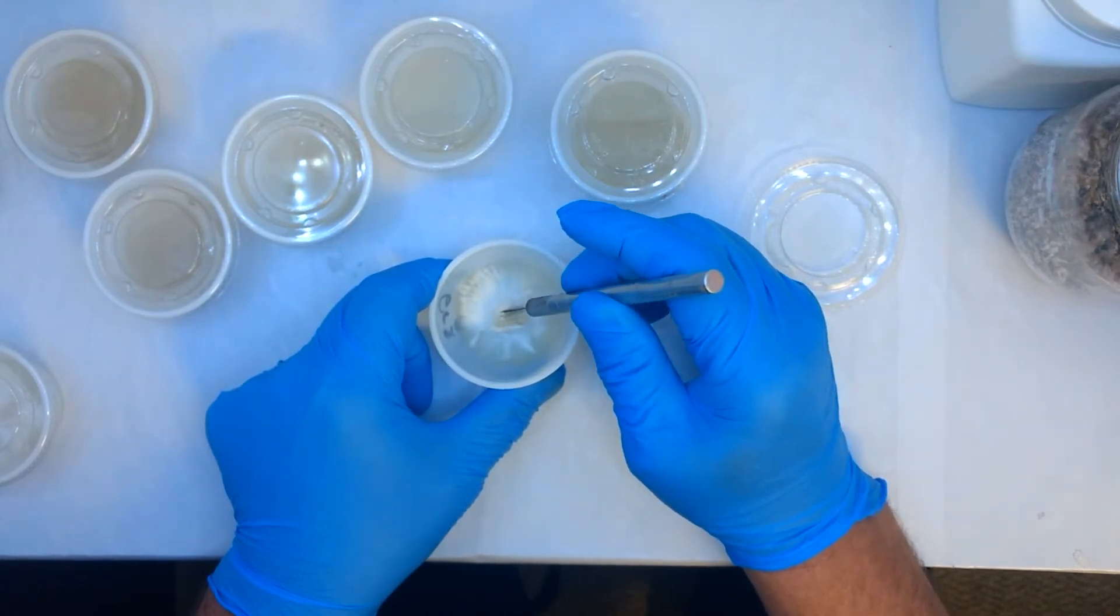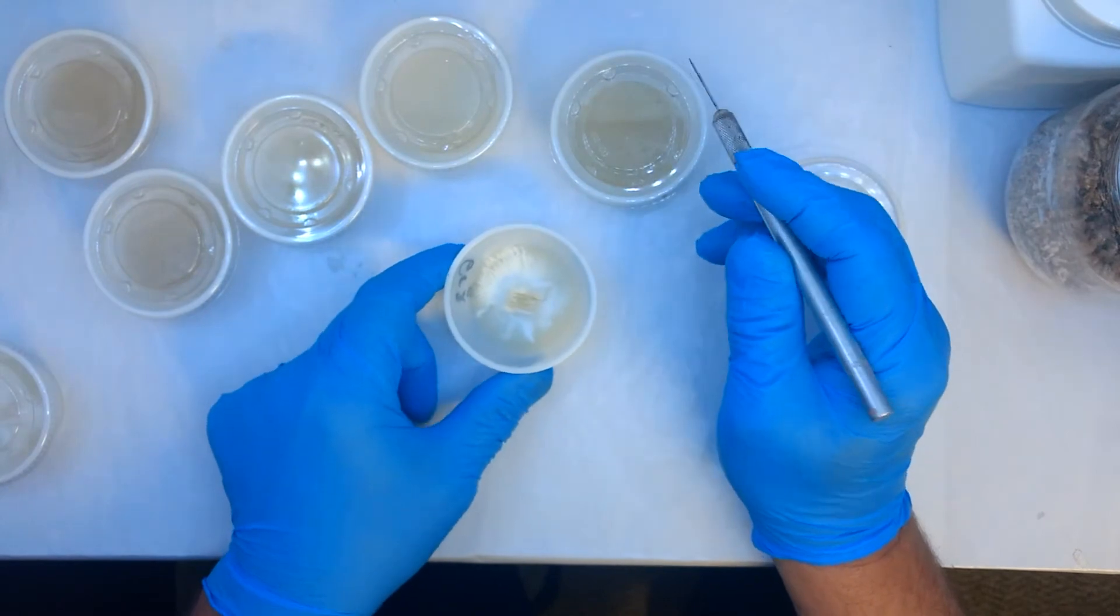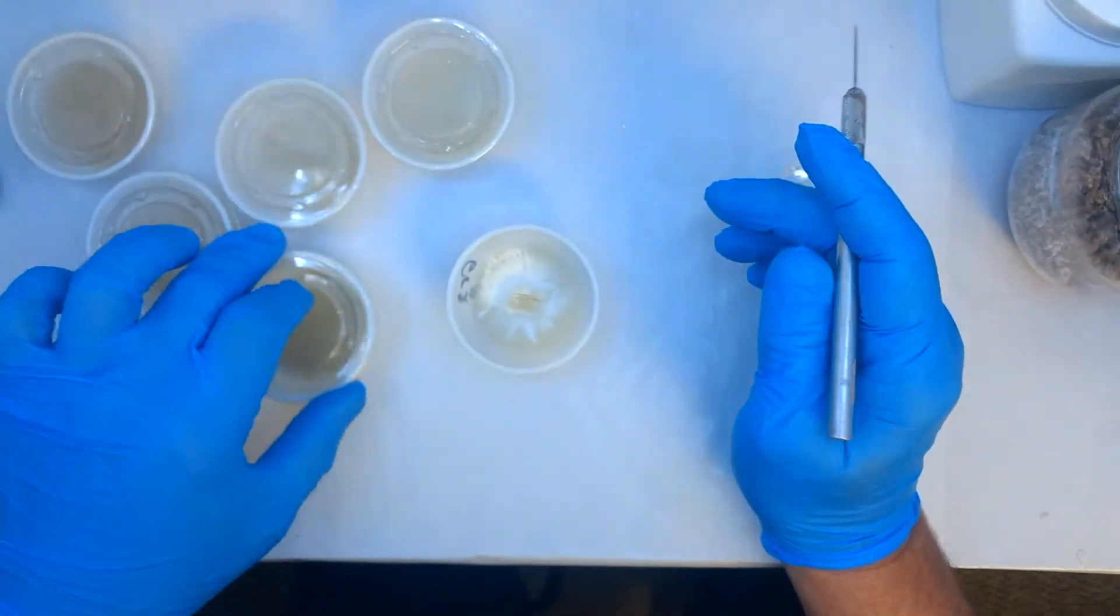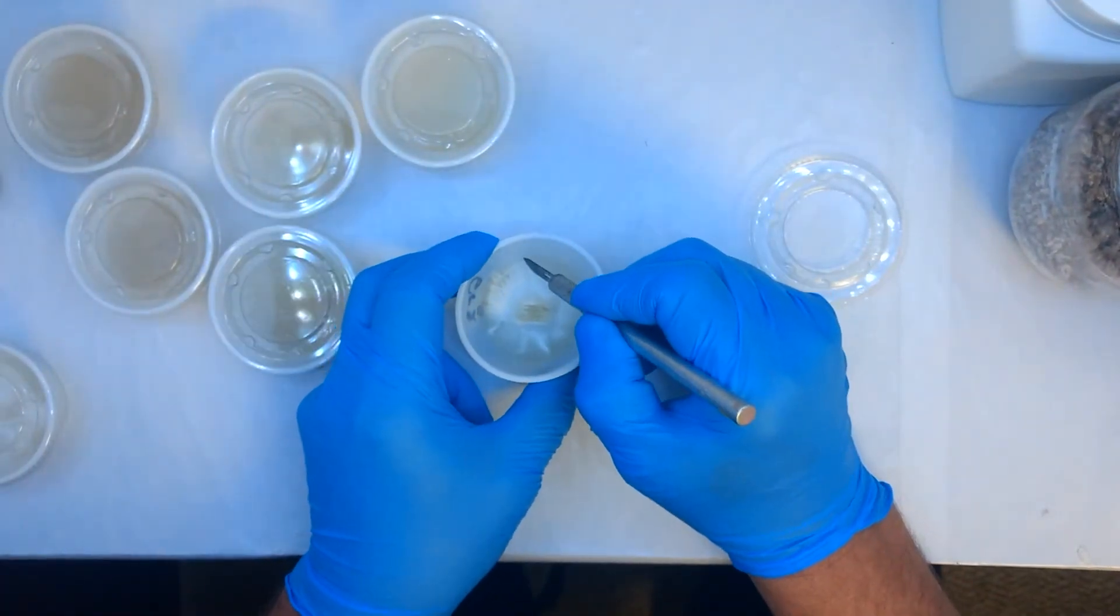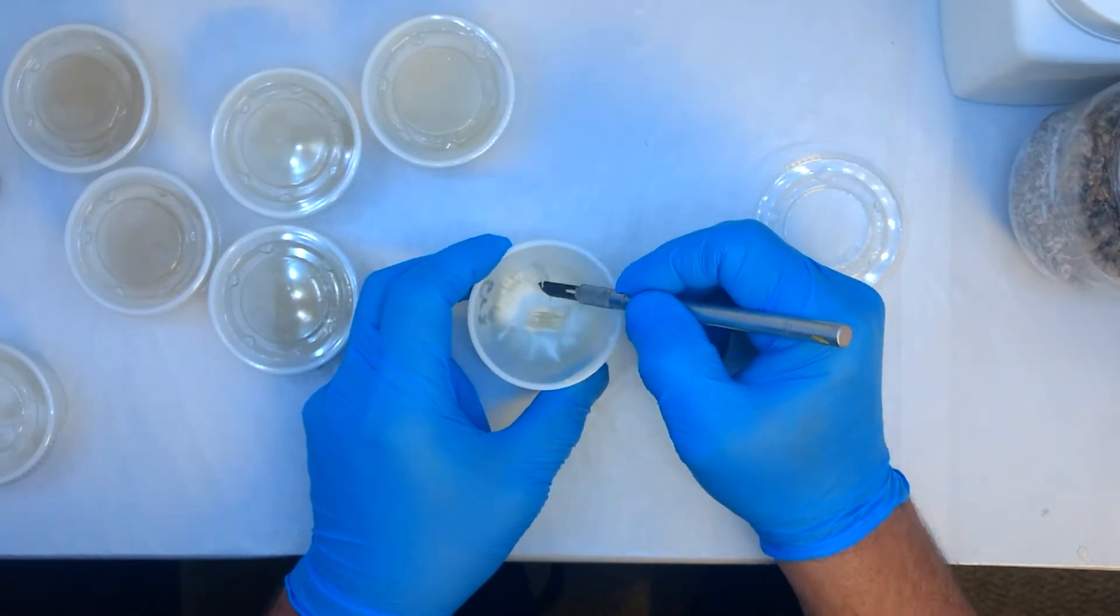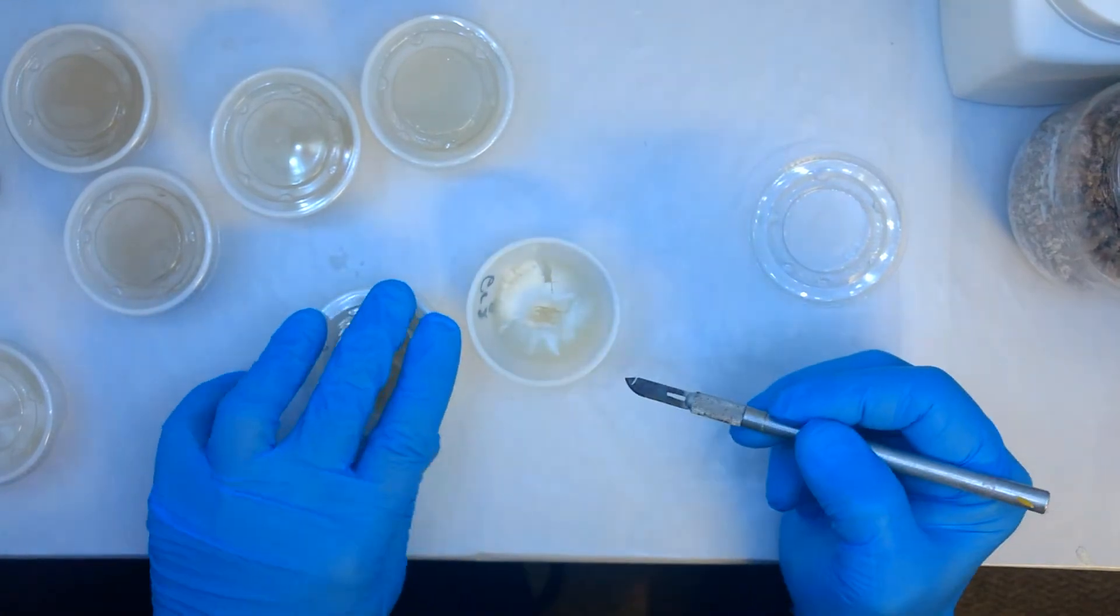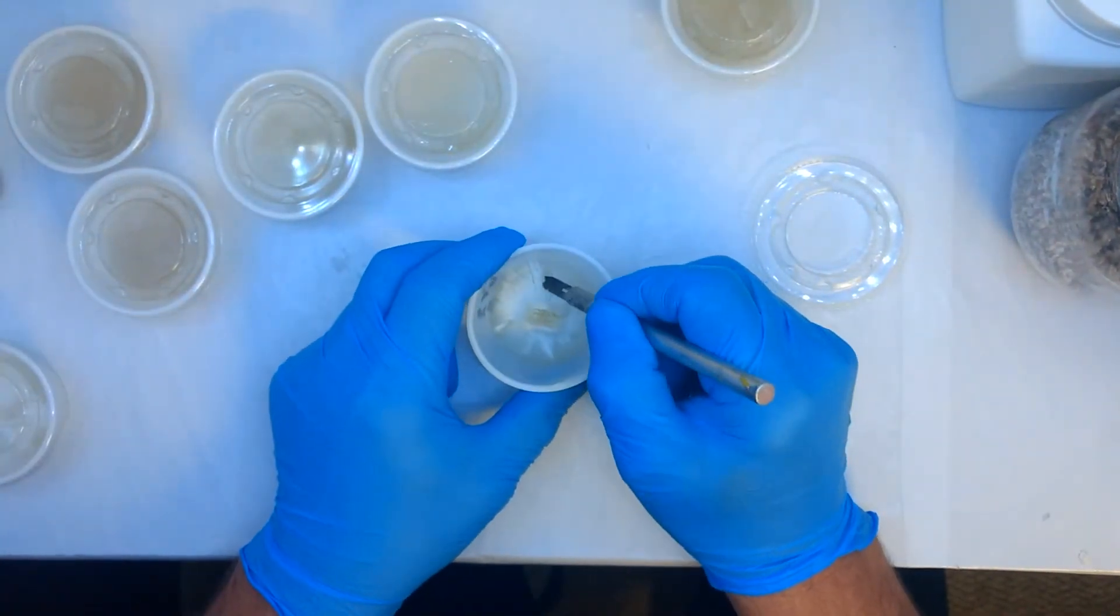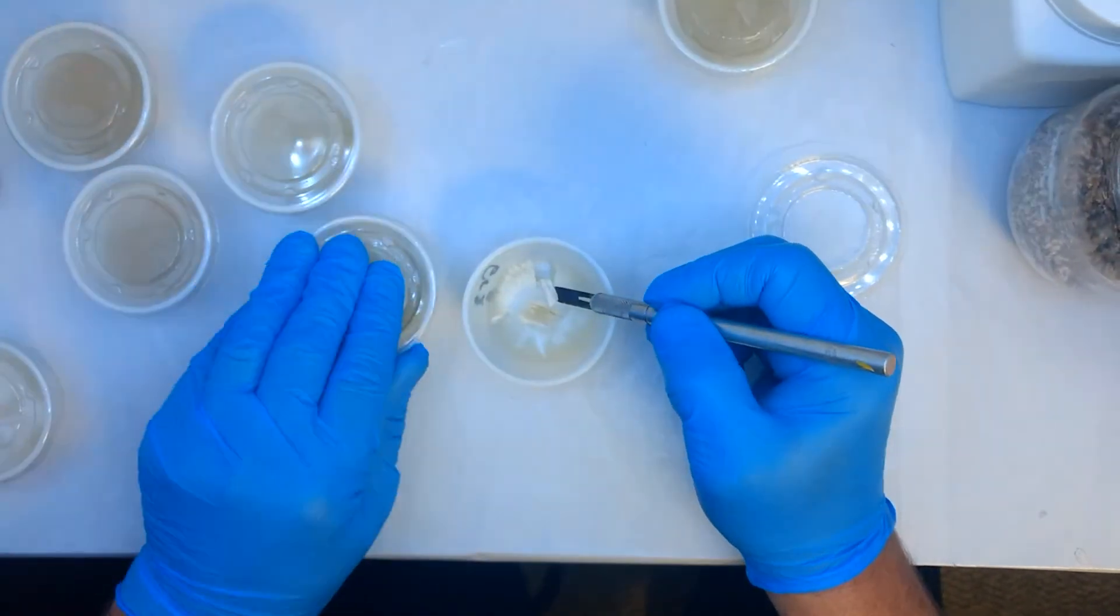Just going through the agar to cut out some chunks, place it onto the next agar dish and move along. I don't feel it necessary to have to flame sterilize your scalpel every time, but I will sterilize it here again and continue doing agar sectoring.